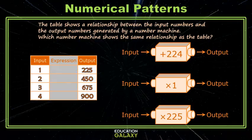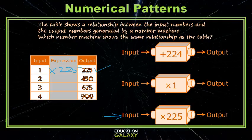Let's try a different one. The next one says to multiply by 1. So if I multiply by 1, I get 1 times 1, which is 1, and this is not correct. Let's try the last one, which says multiply by 225. If I multiply by 225, I get 225, and if I multiply by 225 for the next value, I do get 450. It appears to work for the other values as well. Now it's your turn to practice numerical patterns.